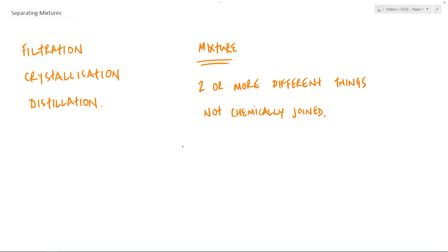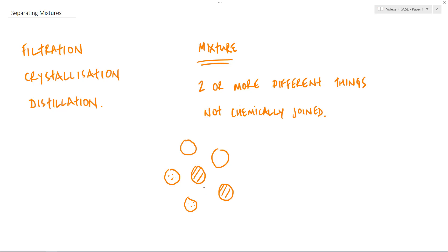We can use a particle diagram to highlight this idea. Here's one particle, here's a different particle, and I'll introduce a third one. The key thing is I've got three different things, I know they're different because I've shaded them differently, but they are not chemically conjoined - there is no bond between them. Therefore this is a mixture. A more obvious example would be salt and pepper in a bowl, or rice and peas - two separate things, not chemically joined.